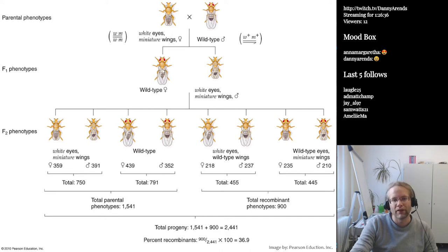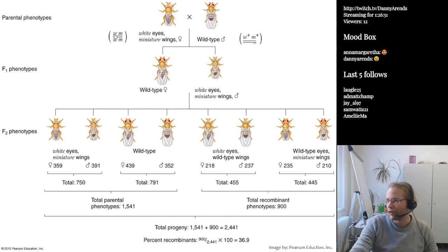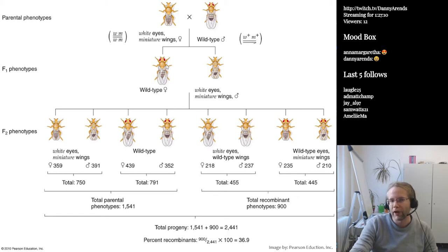When they did this cross, they observed that the individuals coming out were wild-type females, but all of the males had white eyes and miniature wings. That is because every male gets their X chromosome from the female, so all males get a W and M. The females get a W-M chromosome from the mother but always get the W-plus M-plus chromosome from the father, and since this is a dominant phenotype, they look like wild-type Drosophilas.